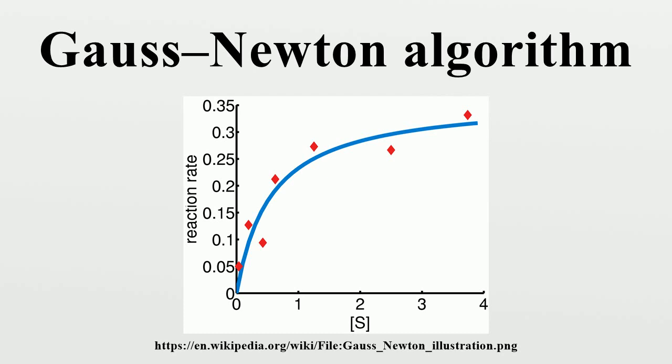That is, the Hessian is approximated by where are entries of the Jacobian J_r. The gradient and the approximate Hessian can be written in matrix notation as these expressions are substituted into the recurrence relation above to obtain the operational equations.